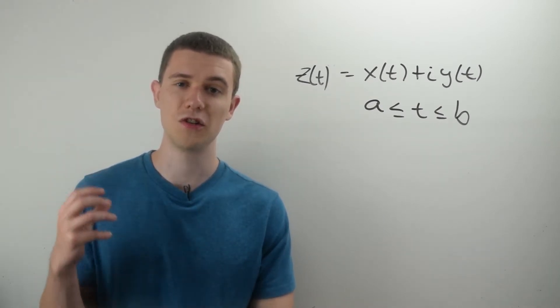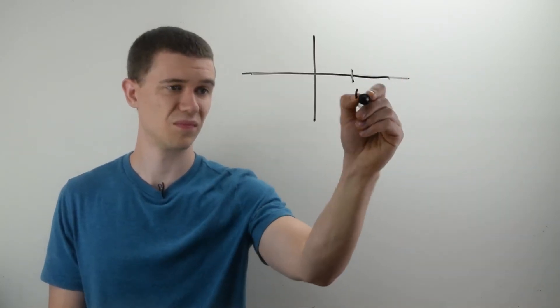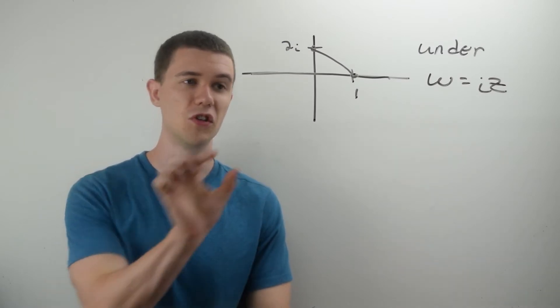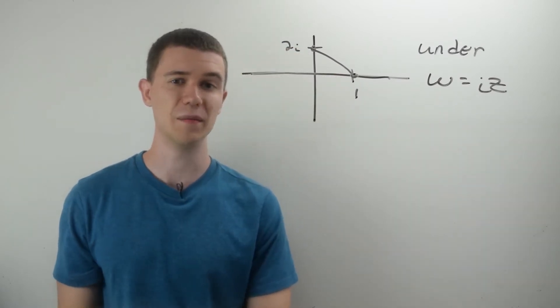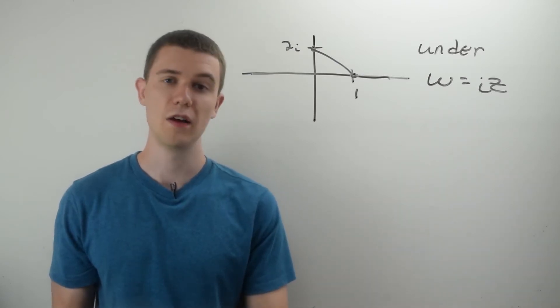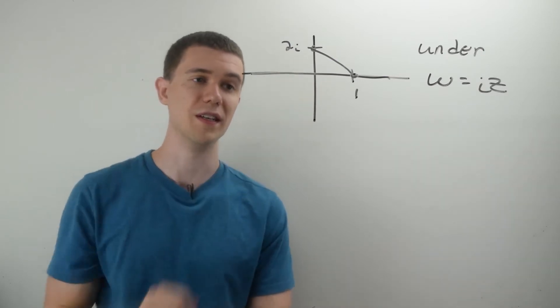These parameterizations will help us find images under complex maps. Let's do an example. In this example, I want to find the image of this line segment under this function W equals iZ. To do this, I'm going to need to find a parameterization for this line segment.